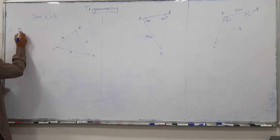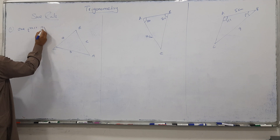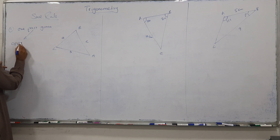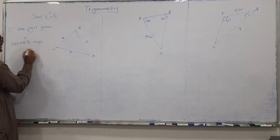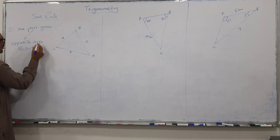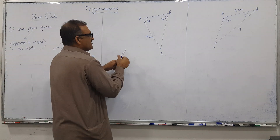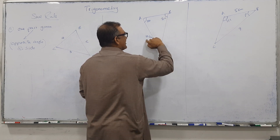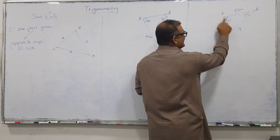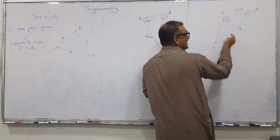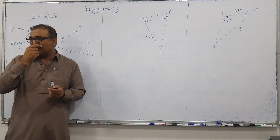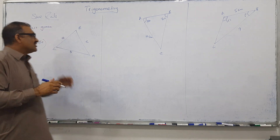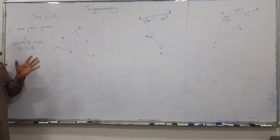Another way to know when to apply the sine rule is: one pair given. A pair means an opposite angle and its opposite side — that is called one pair. So whenever we have one pair value given — meaning an angle and its opposite side are both known — we can apply the sine rule.